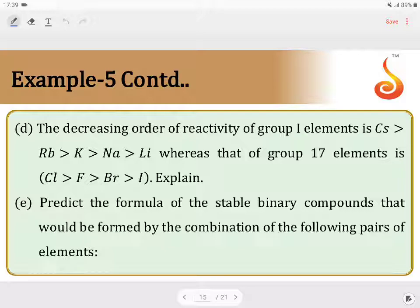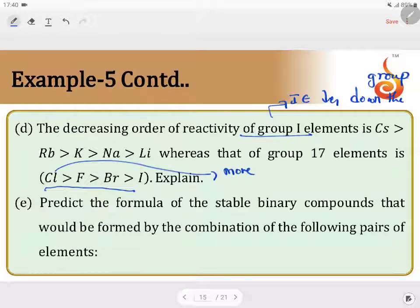Next. The decreasing order of the reactivity of group 1 element is Caesium greater than Rubidium greater than Potassium, Sodium, Lithium. Whereas, for group 17, the reactivity order is Chlorine greater than Fluorine. Then you have Bromine and Iodine. Why is it so? If you consider group 1 element, Ionization energy decreases down the group. When the ionization energy is less, it can easily take part in the reaction. But for group 17 element, we are saying that Chlorine is highest and Iodine is least. Because this has more electron affinity. More electron affinity. That's why it can undergo reaction easily.